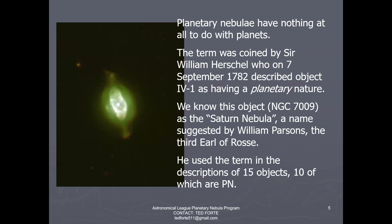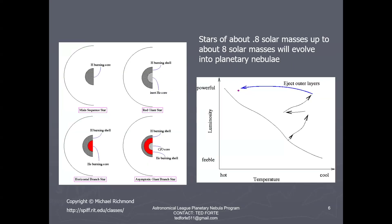He went on to use that term in the description of 15 other objects, 10 of which are actually truly planetary nebulae. To understand what a planetary nebula is, we're going to talk just a little bit about the evolution of an intermediate mass star.